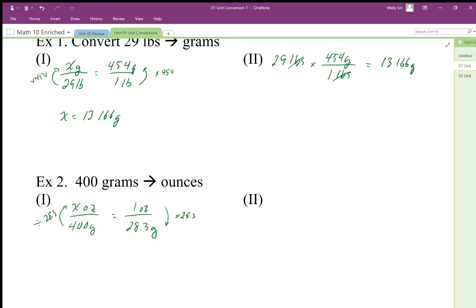We end up with 400, and then we're going to divide by 28.3. We get 14.13 ounces. So x equals 14.13 ounces.